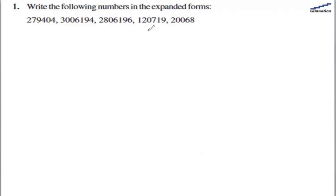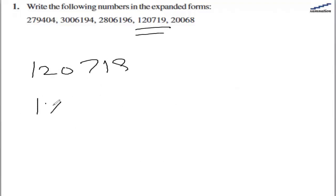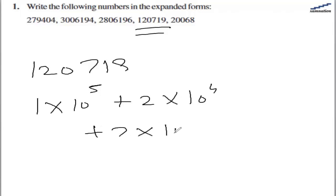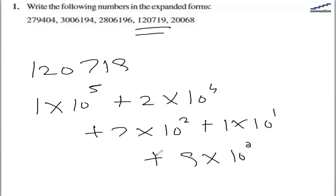So let's see the expanded format for 120719. Count: 1, 2, 3, 4, 5. So we have 1 multiplied by 10 raised to power 5, plus 2 times 10 raised to power 4, then 7 times 10 raised to power 2, then 1 times 10 raised to power 1, and plus 9 times 10 raised to power 0. So this will be the expanded format for the number 120719.